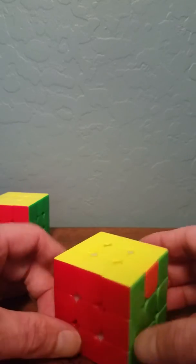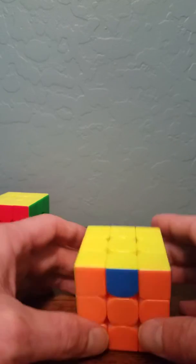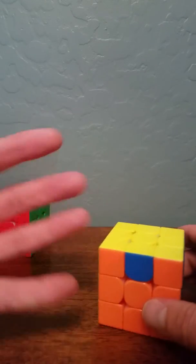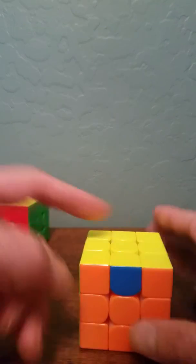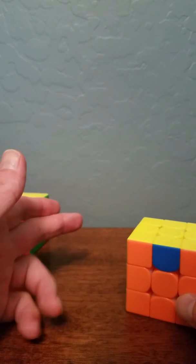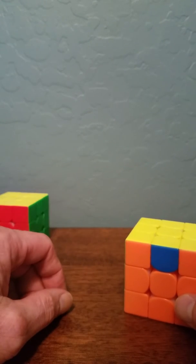You can line them up if you want, but it doesn't really matter. The next video will cover the four different cases that pop up after the corners are in: the H perm, Z perm, U A perm, and U B perm.